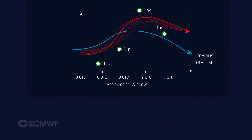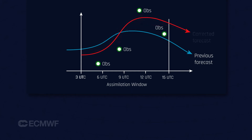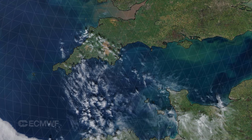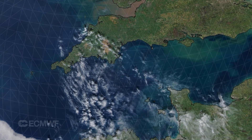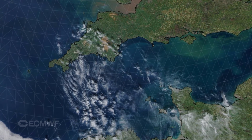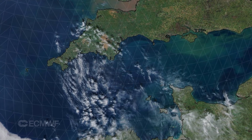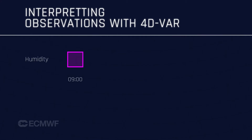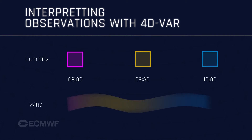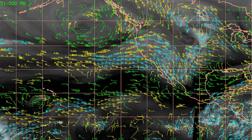4DVAR can take information from a satellite which might be telling us about humidity at maybe 9 o'clock, and it will compare that information with what the satellite tells us at 9:30 or 10 o'clock and see how that humidity has changed. It can interpret those changes of humidity not in terms of adding or reducing moisture, but in terms of the wind which has made that humidity move from one place to another. So 4DVAR is the only system that can use humidity observations to derive wind information about the atmosphere, and this unique feature is called wind tracing.